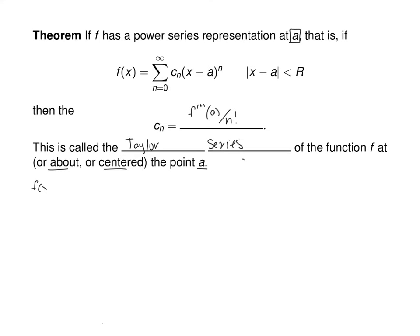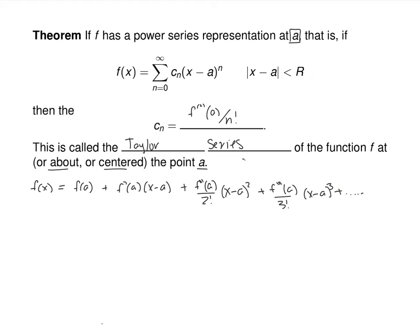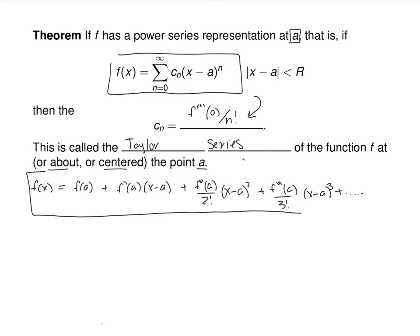Here is that sum written out in non-summation notation: the Taylor series representation, if a function has one, is f of a, plus f prime of a times x minus a over 1 factorial, plus the second derivative at a over 2 factorial times x minus a squared, plus the third derivative at a over 3 factorial times x minus a cubed, and so on.